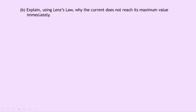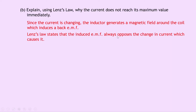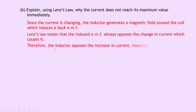Part B then says to explain using Lenz's law why the current does not reach its maximum value immediately. Well first of all, since the current is changing, the inductor generates a magnetic field around the coil which induces a back EMF. Lenz's law states that the induced EMF always opposes the change in current which causes it. Therefore, the inductor opposes the increase in current, meaning it will take time to reach its maximum value.